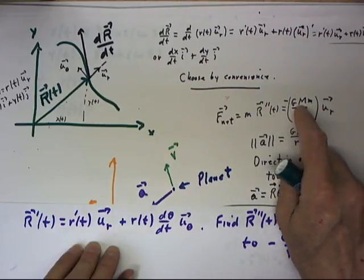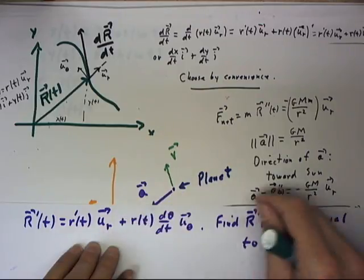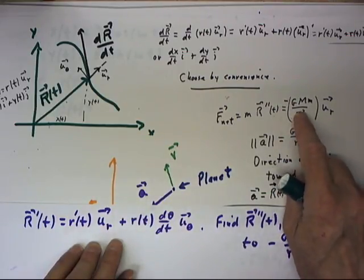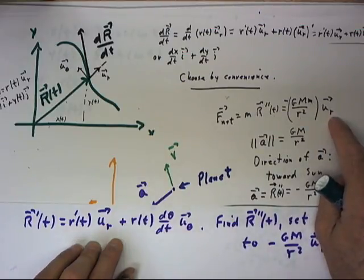And that's the magnitude. The vector is directed radially back toward the Sun, so it's going to be the magnitude multiplied by the negative of the ur vector.